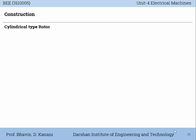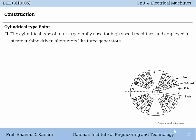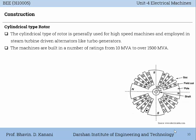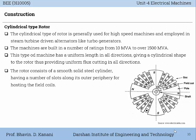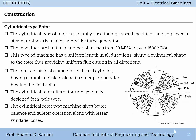Now the construction of the cylindrical type rotor is very well explained by this diagram. The cylindrical type of rotor is generally used for high speed machines and employed in steam turbine driven alternators like turbo generators. The machines are built in a number of ratings from 10 MVA to over 1500 MVA. This type of machine has a uniform length in all directions giving a cylindrical shape to the rotor, thus providing uniform flux cutting in all directions. The rotor consists of a smooth solid steel cylinder having a number of slots along its outer periphery for hosting the field coils. The cylindrical rotor alternators are generally designed for two pole types, and give better balance and quieter operation along with lesser windage losses.